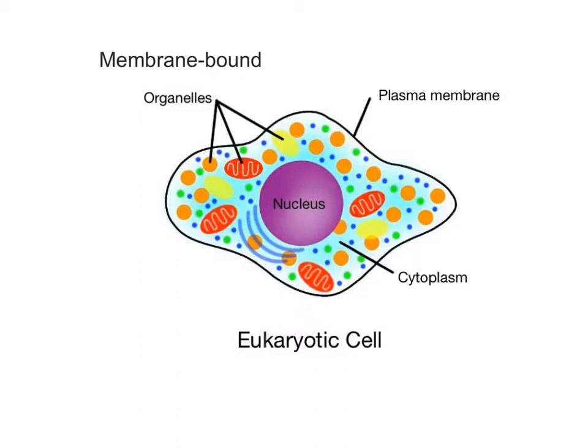Every eukaryotic cell has three parts: the plasma membrane, the cytoplasm, and the nucleus.